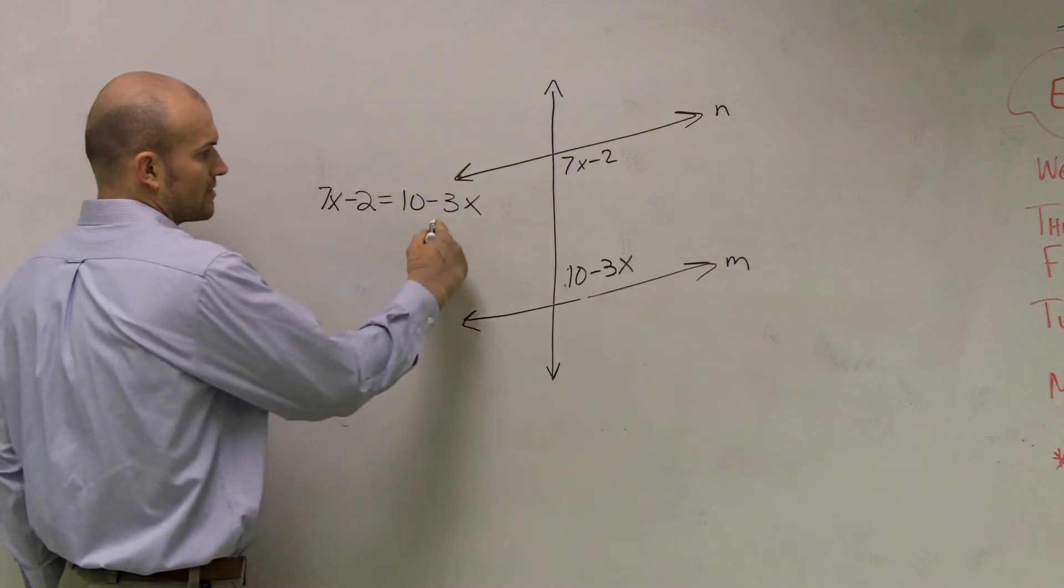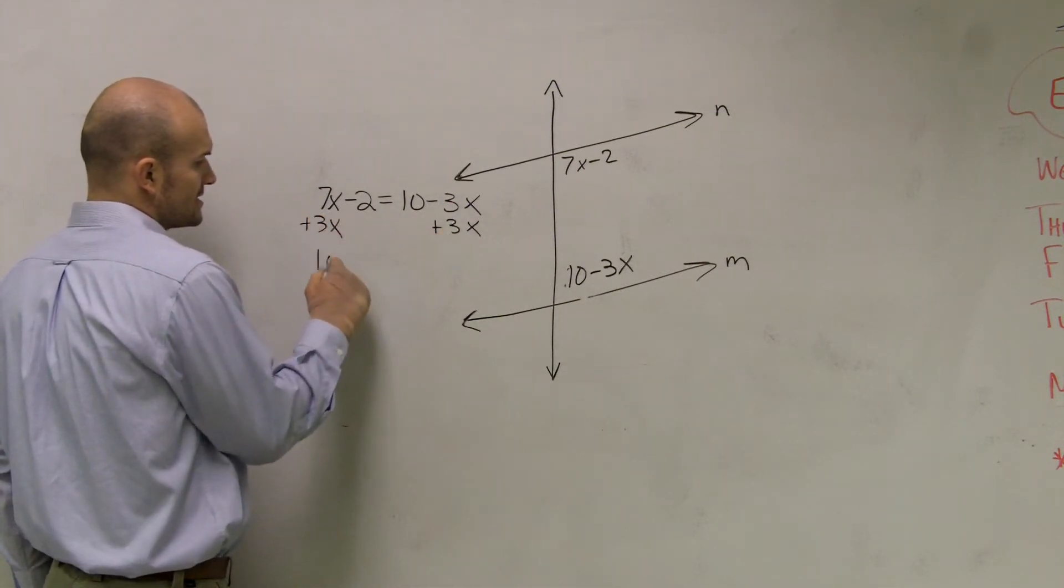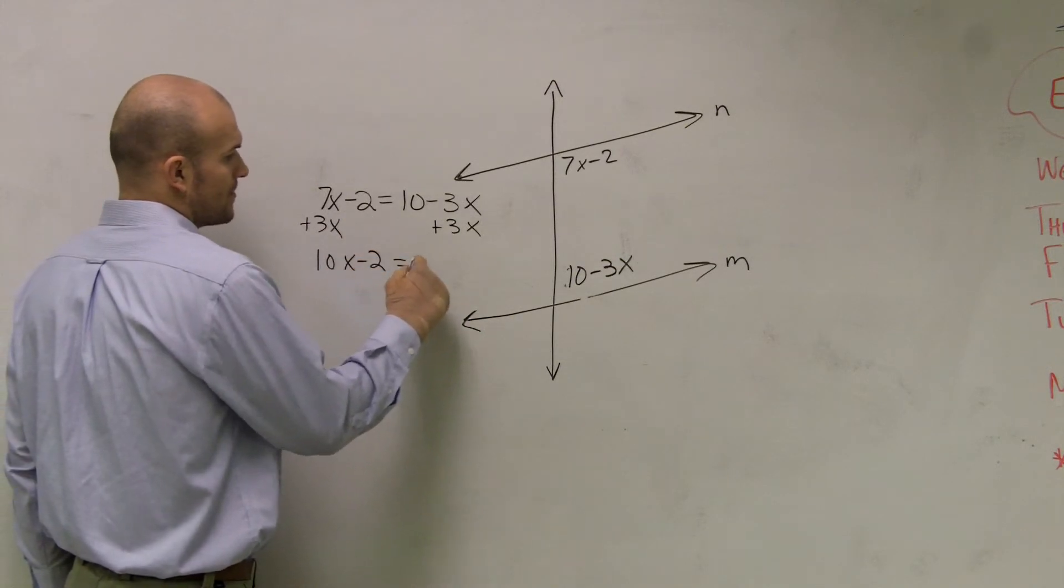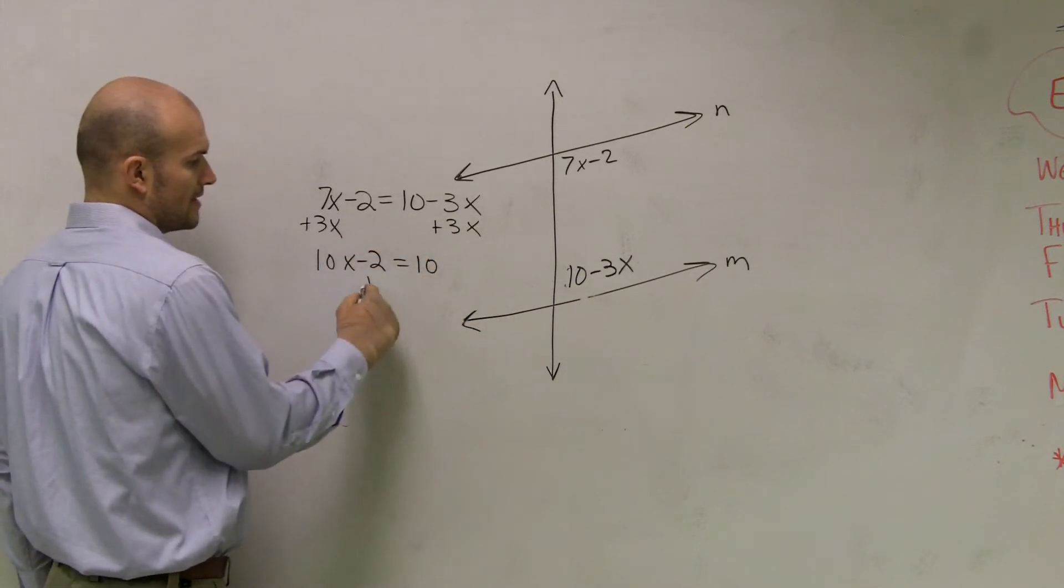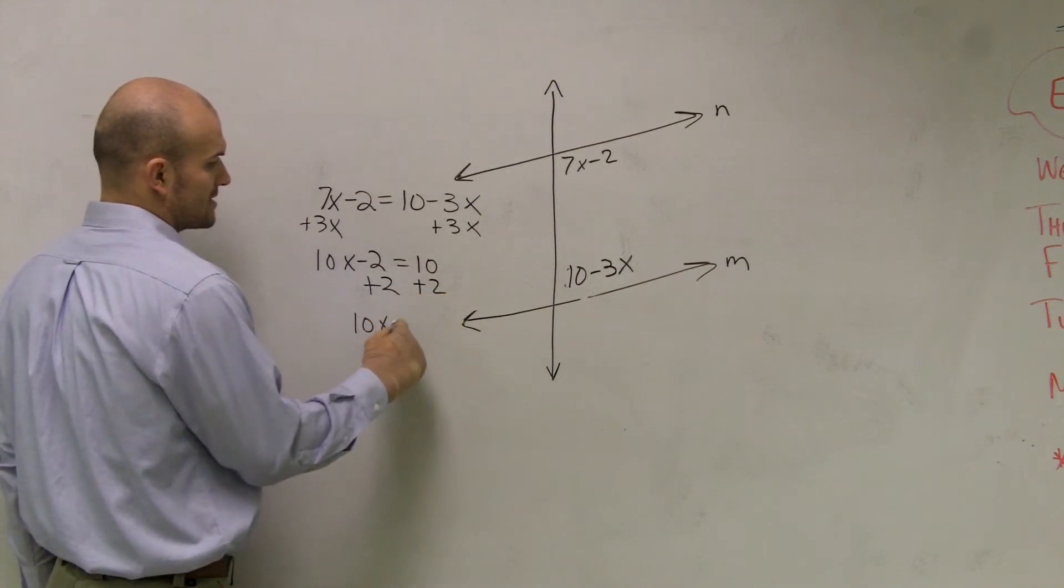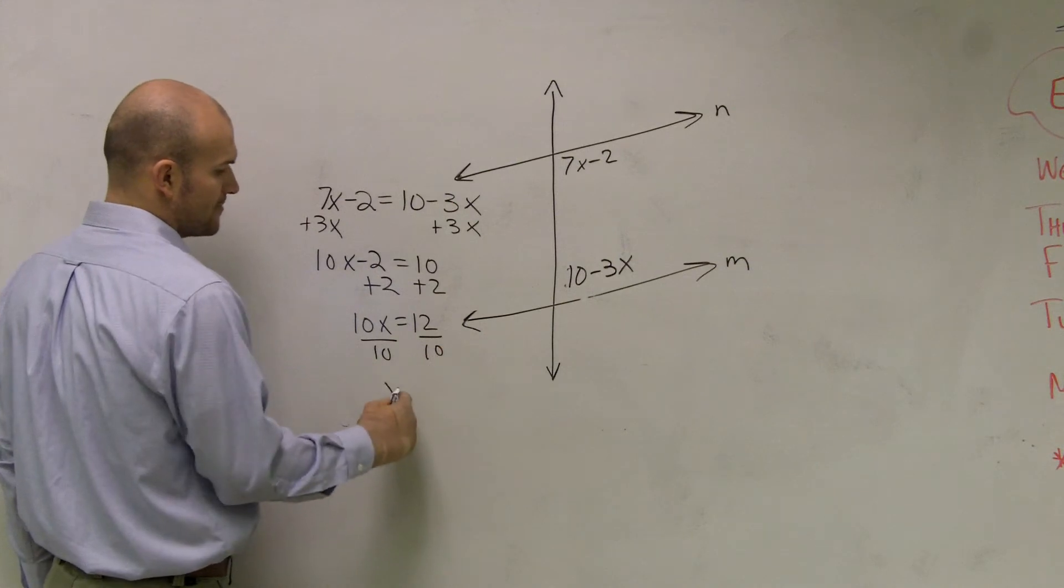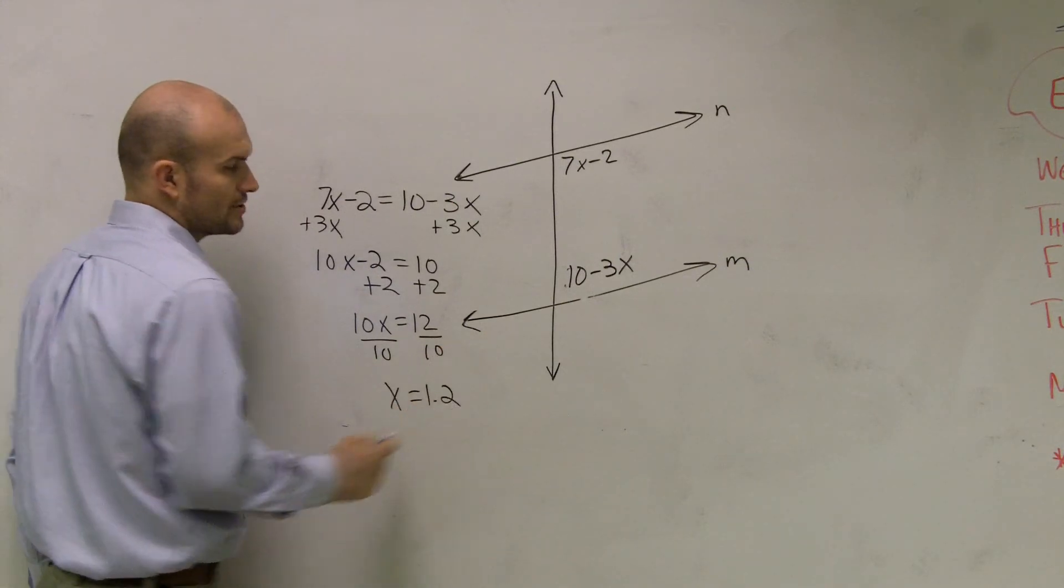So now I need to solve for x. So what I'll do is I'll add 3x. So I get 10x minus 2 equals 10. Then I'll isolate my variable by adding the 2. So I get 10x equals 12. Divide by 10. x equals 1.2.